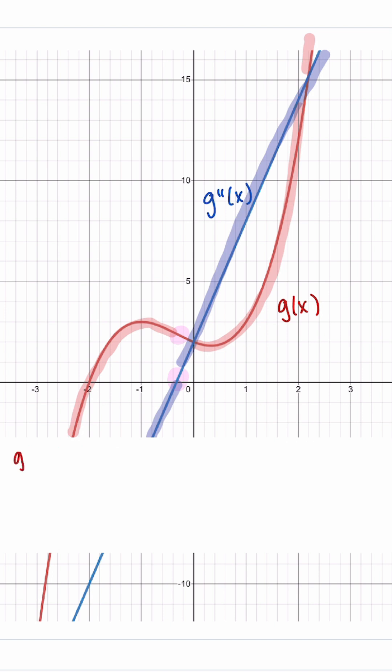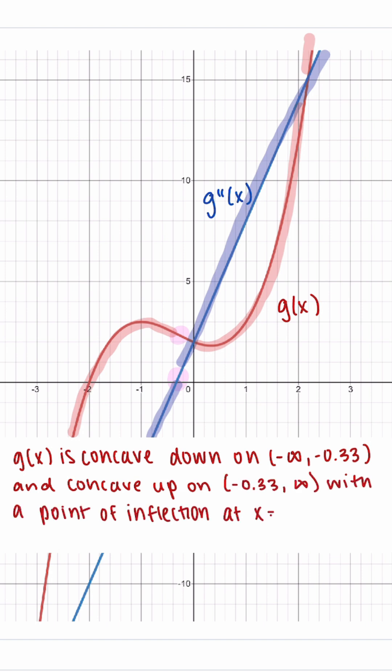If we wrote this out all nicely, we have g is concave down on negative infinity to negative 0.33 and concave up on negative 0.33 to infinity, with a point of inflection at x equals negative 0.33.